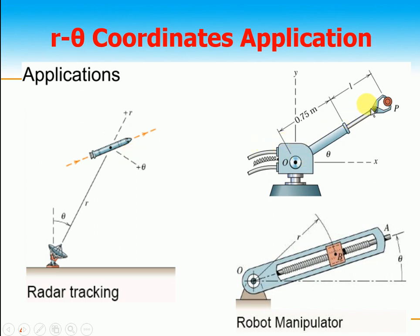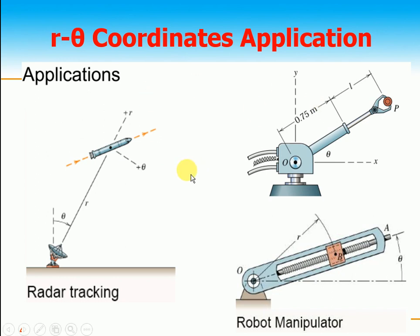Similarly, if you see this robotic arm, its length L is changing and the arm is moving, so it is easy to analyze in r-theta coordinates. Also, this ratchet is rotating at a certain angle and this slider moves along the radial direction by the movement of the lead screw — again easy to analyze in r-theta coordinates. These are some examples where r-theta coordinates are easier than other coordinate systems.